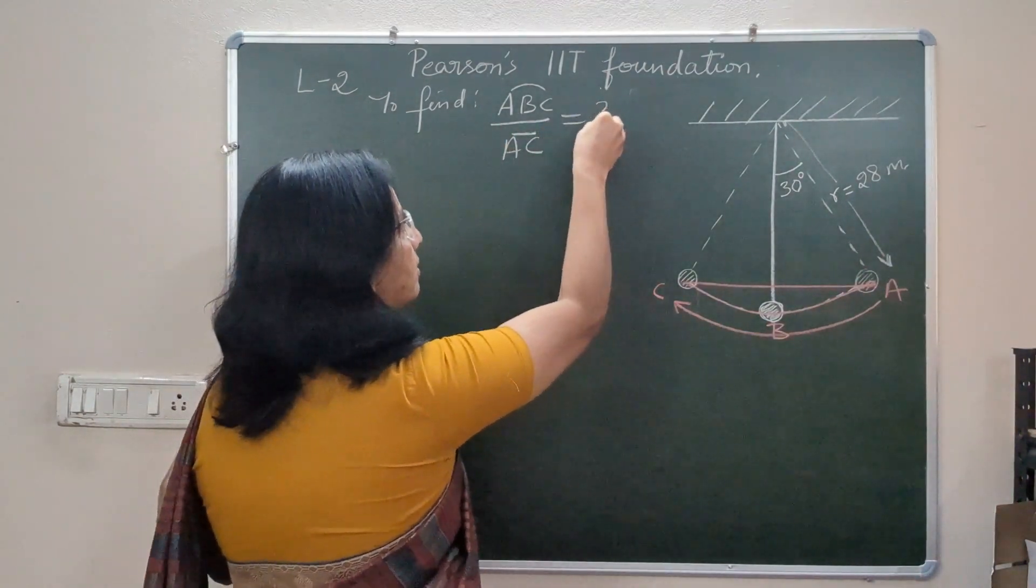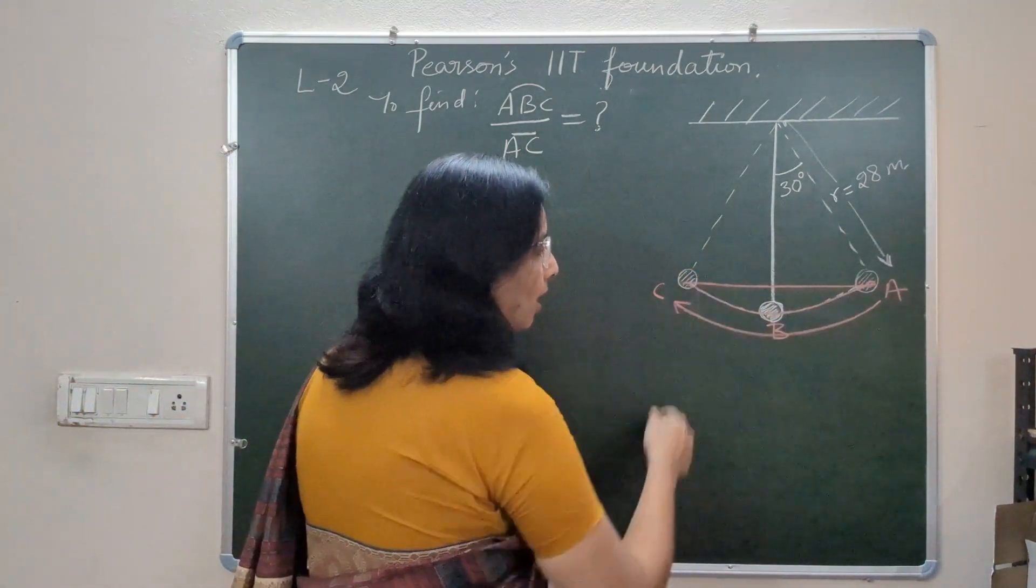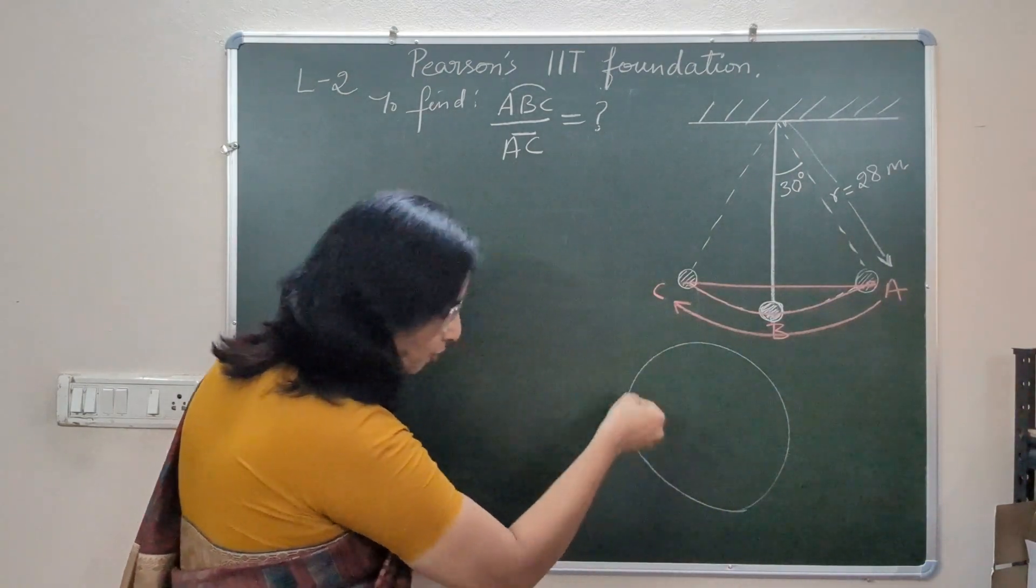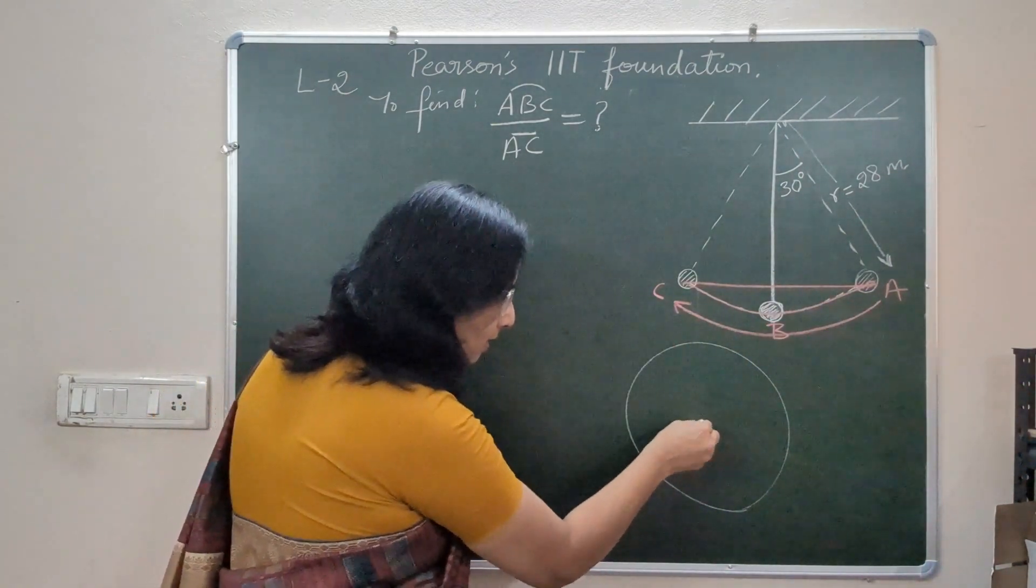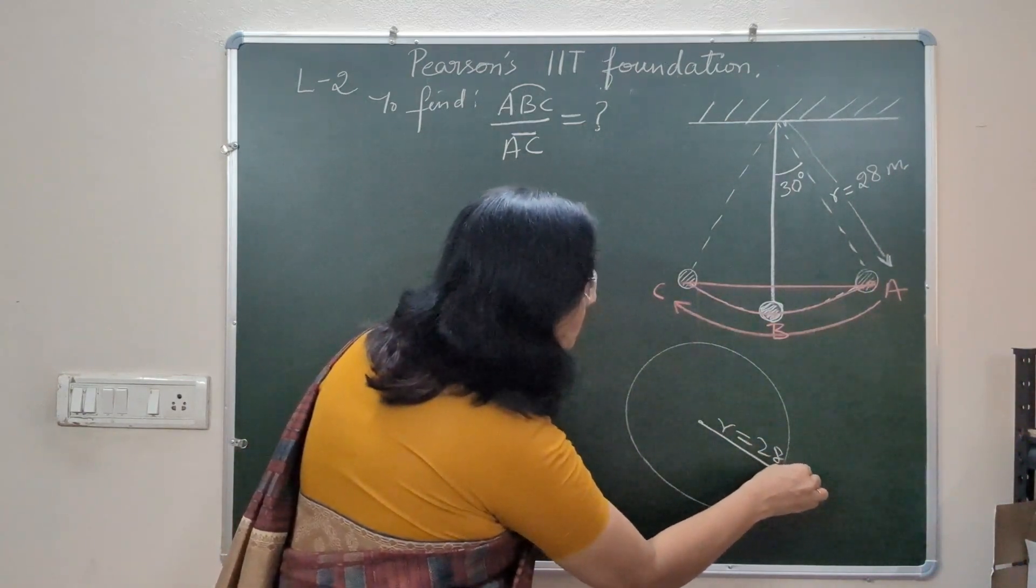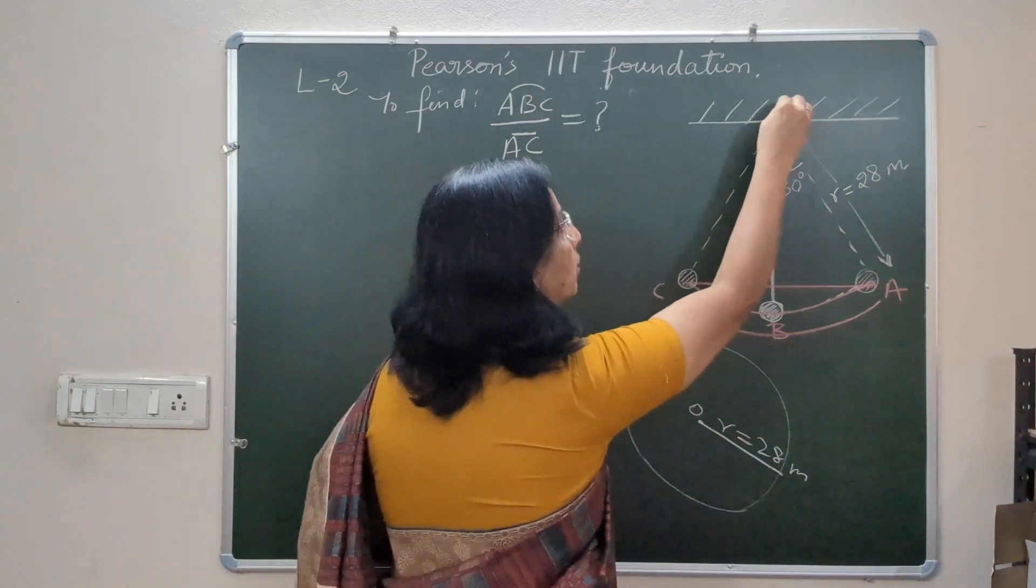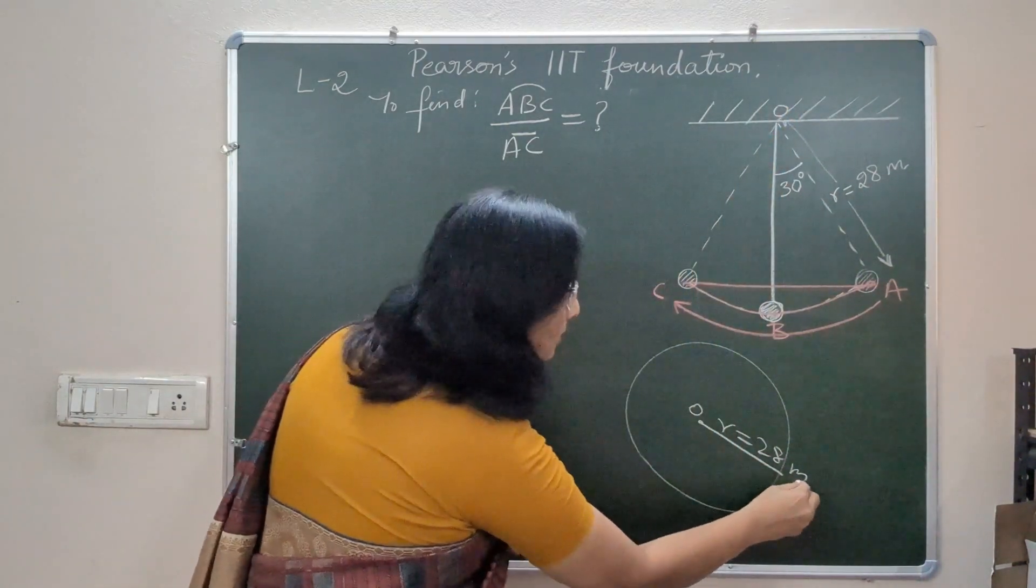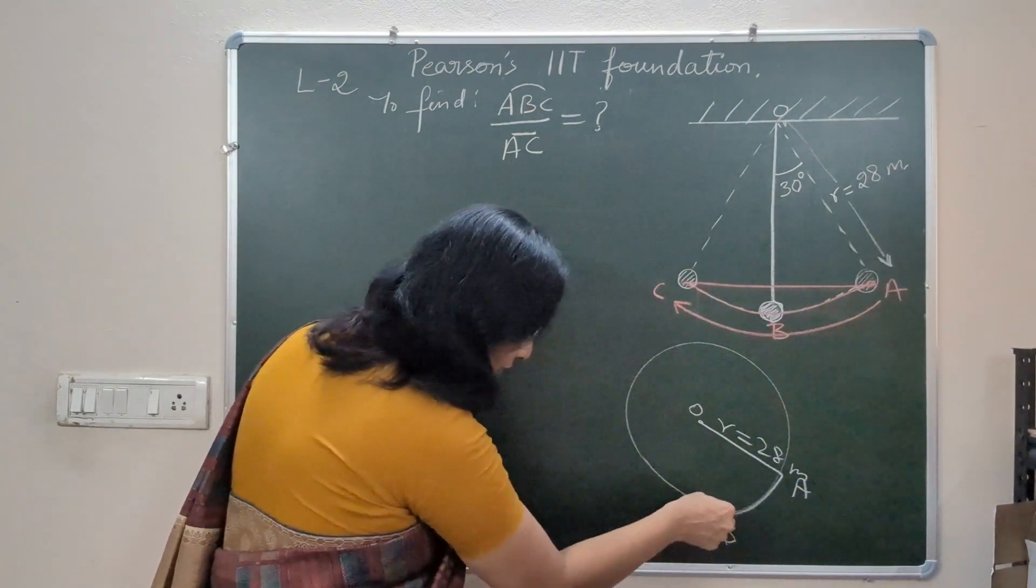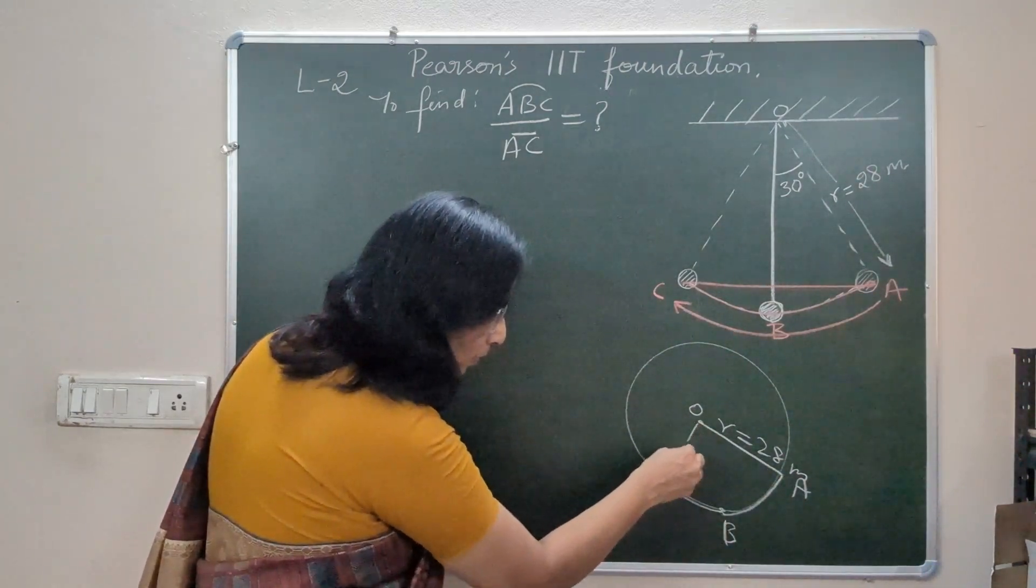So this is what we are supposed to find. To find distance traveled, just assume that this pendulum is part of this circle, a circle whose radius is 28 meters, and this is that rigid point where the pendulum is being placed. And this is A and this pendulum travels all the way to point B and finally goes to point C.